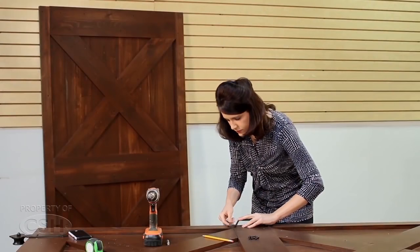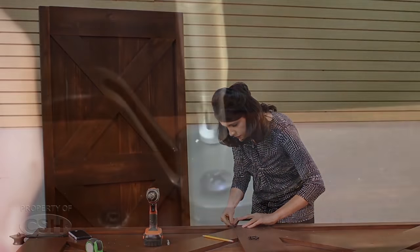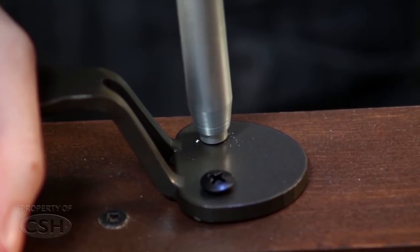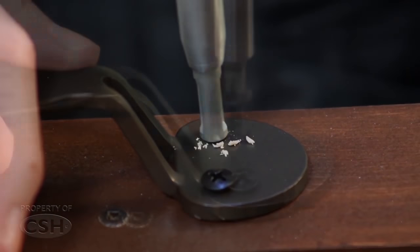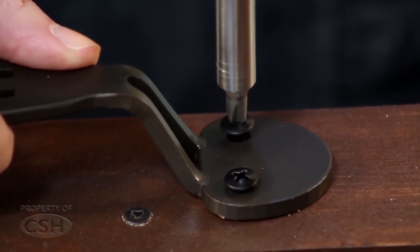Align the handle on the door in the desired location. Using a Vicks bit, pre-drill the hole for the fastener. Secure the handle using the fasteners provided.